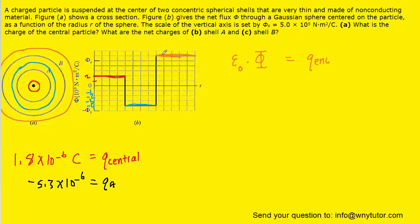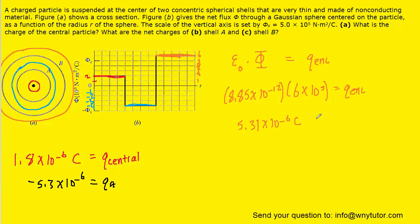The electric flux for the orange Gaussian surface reads 6 times 10 to the 5th from the graph. Multiplying this out gives 5.31 times 10 to the minus 6 Coulombs for the enclosed charge. That orange Gaussian surface encloses the charge on shell B, plus the charge on shell A, plus the charge on the central particle Q_C.